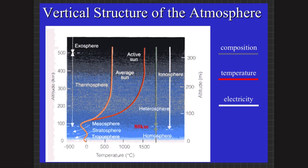Another sphere not yet discussed is the ionosphere, which mainly extends from the mesosphere layer up through the exosphere. It is called the ionosphere because it is an electrified region within the upper atmosphere where large concentrations of ions and free electrons exist. The ionosphere starts from about 60 kilometers above Earth's surface and extends into the exosphere, playing an important role in radio communications.